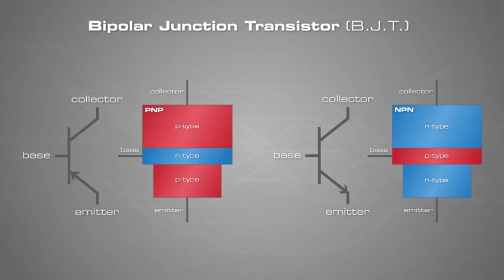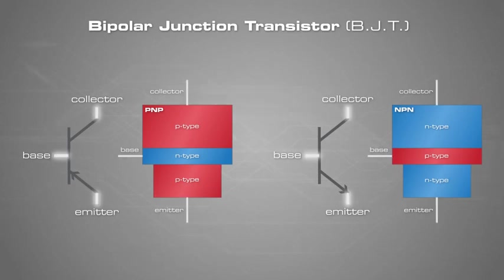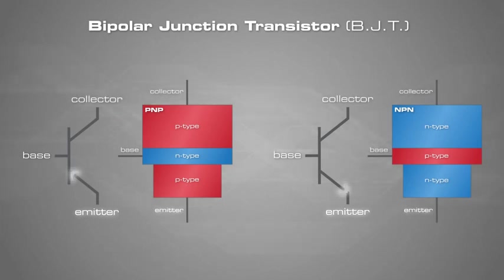These are the schematic symbols for NPN and PNP bipolar junction transistors. The three leads of a BJT are called the emitter, base, and collector. The emitter lead can always be identified by the arrow.